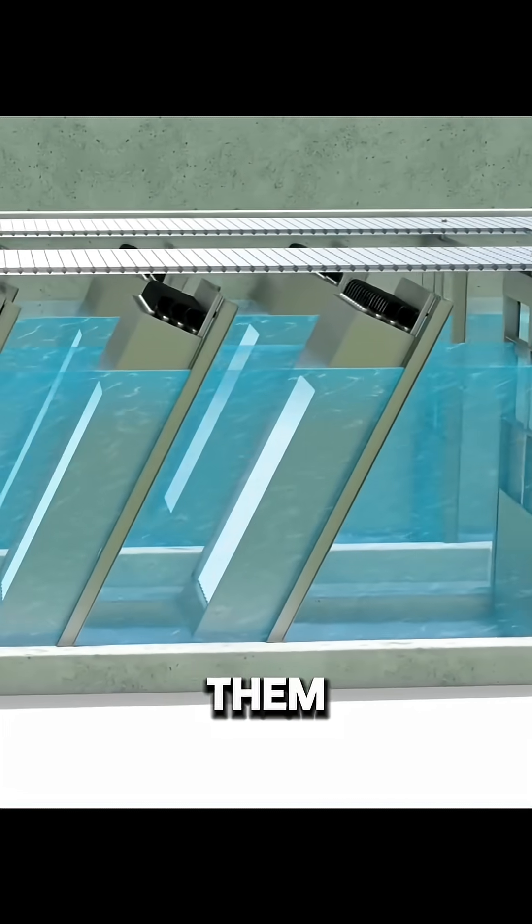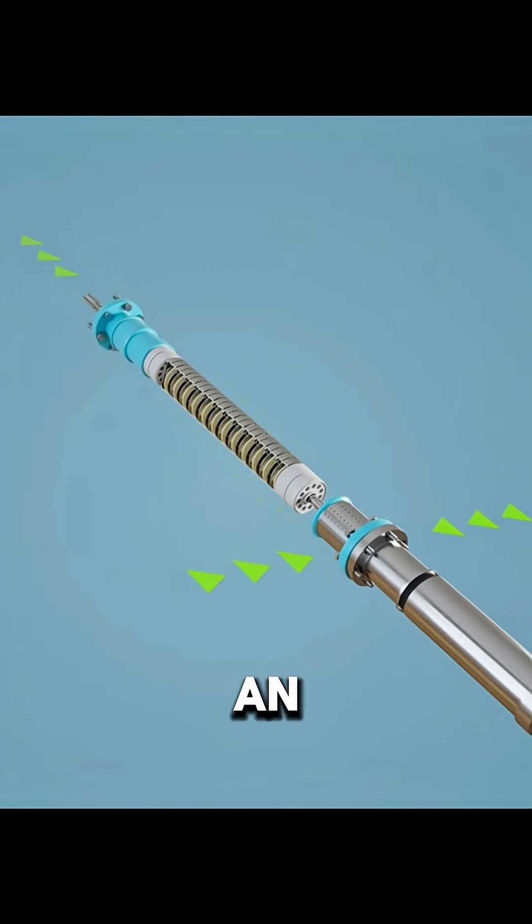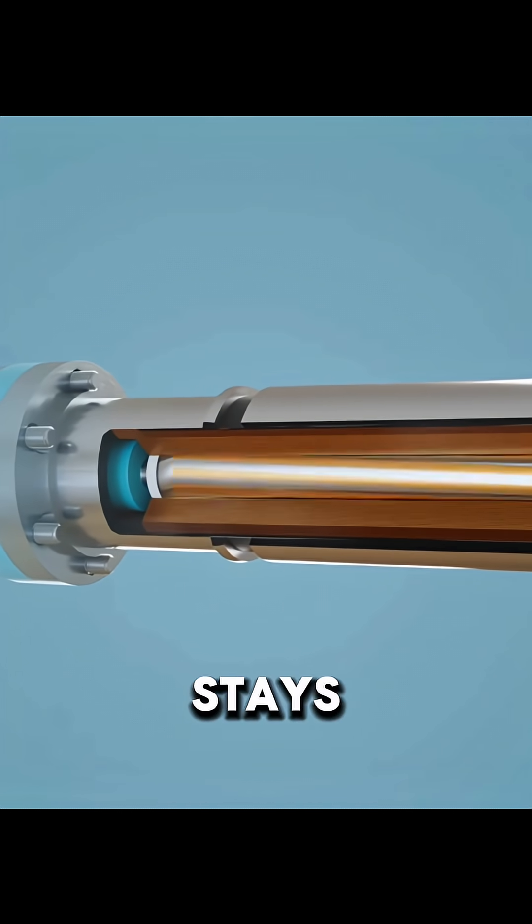So how do you separate them? That's where reverse osmosis comes in. High-pressure pumps push seawater through an ultra-thin membrane, thinner than a strand of hair. Only water molecules can pass through, while salt stays behind.